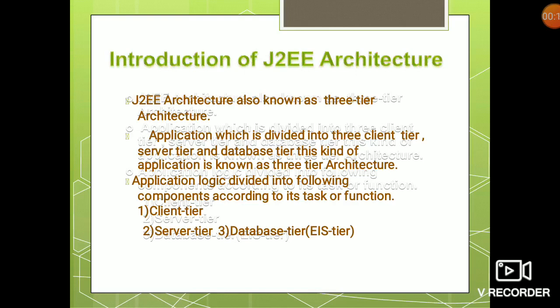The J2EE architecture is divided into three main tiers: client tier, server tier, and database tier. Client tier holds the logic of how the entire application interacts with the user. Server tier consists of the main logic of how the entire application works, and the database tier holds the logic of how the data should be fetched and displayed to the user.